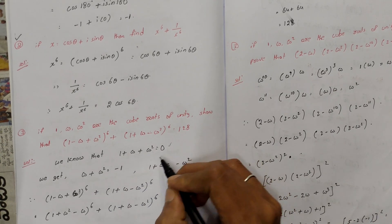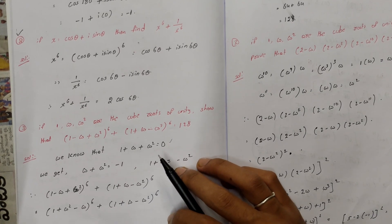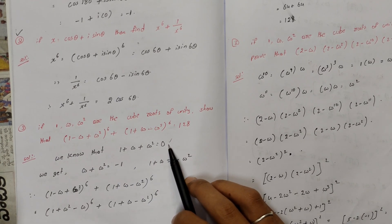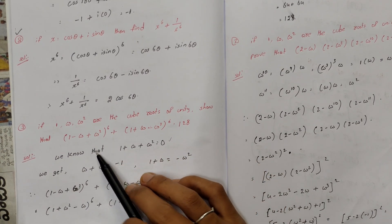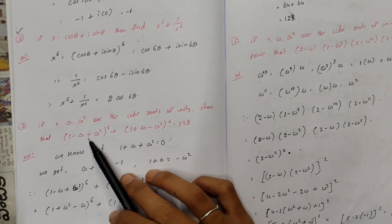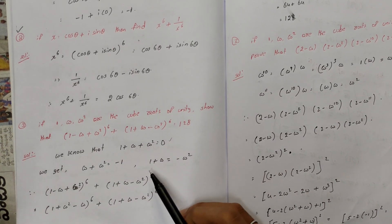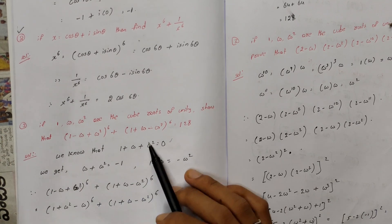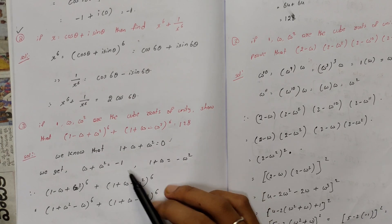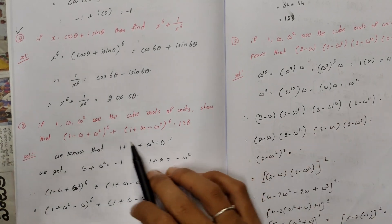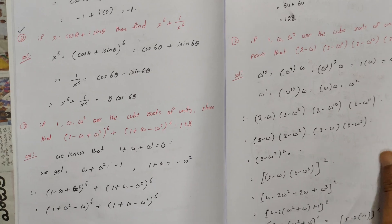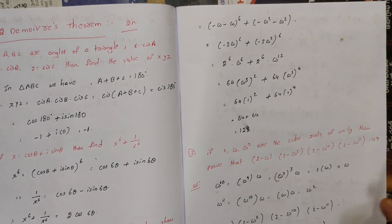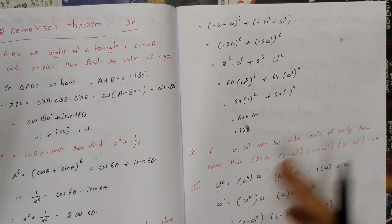So 1 plus omega square equals negative omega, and 1 plus omega equals negative omega square. Using these values, we can substitute and simplify. The values of omega square and omega cancel appropriately, and after working through the process you can prepare these two marks questions quickly and get them noted fast.